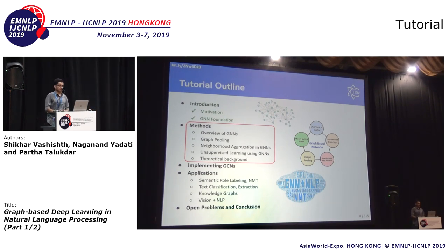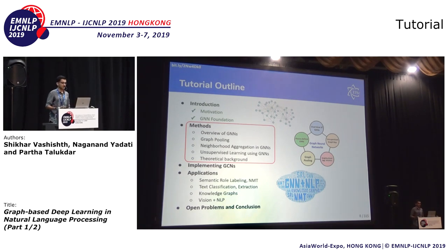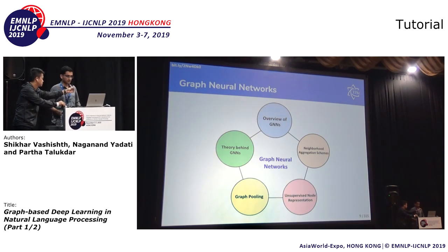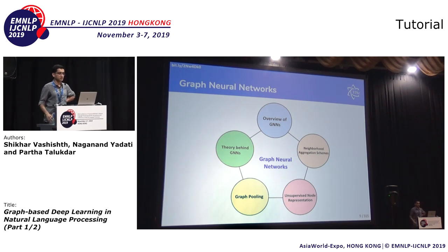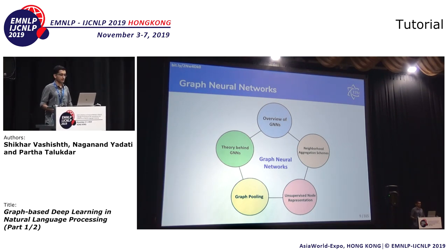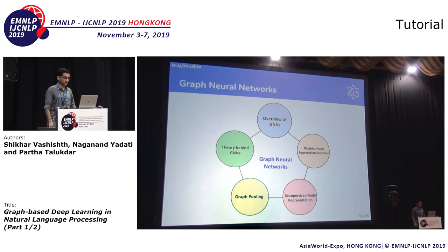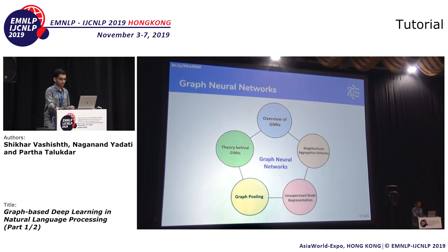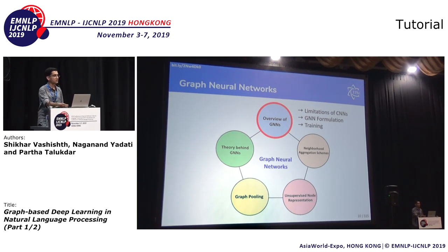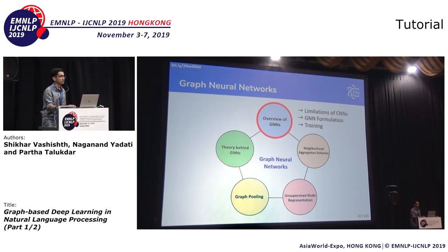Good afternoon, everyone. I'll be covering the main part of the tutorial, which is about methods. I'll start with the overview of GNNs, then go into different subsections — neighborhood aggregation schemes, how GNNs can be used for unsupervised learning when labels are not available, graph pooling, and some theory behind GNNs, like how we get the equations we use. We are all familiar with convolutional neural networks. CNNs have had a big impact on both the vision and NLP communities — in image recognition, people have achieved human-level performance.